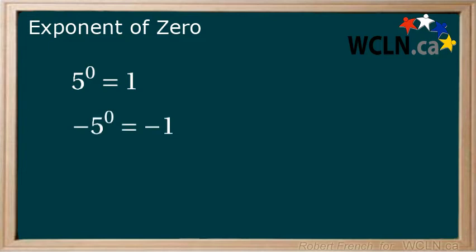Negative 5 to the power of 0 equals negative 1. If you are looking at this and wondering why the answer is not 1, the 0 exponent is only attached to the 5. Let's look at a very similar question now. Bracket negative 5 bracket to the power of 0. Here, the exponent is applied to everything in the brackets, which means the answer is 1.